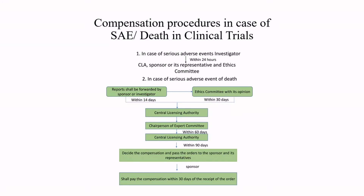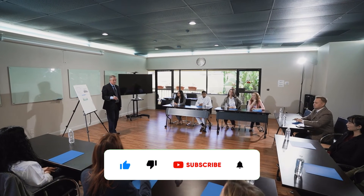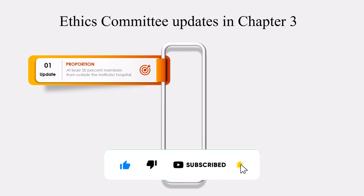You should also know the procedure for compensation in the case of a Serious Adverse Event (SAE) or death in a clinical trial. A report has to be submitted by the investigator, then by the ethics committee, then it goes to the central licensing authority, and finally the pharmaceutical company pays the person affected in the clinical trial.